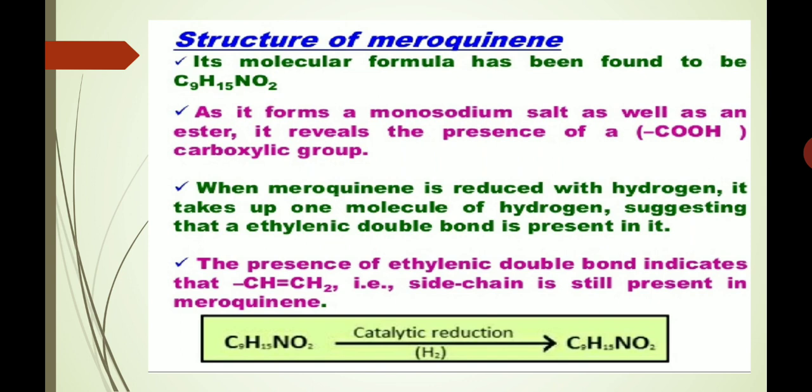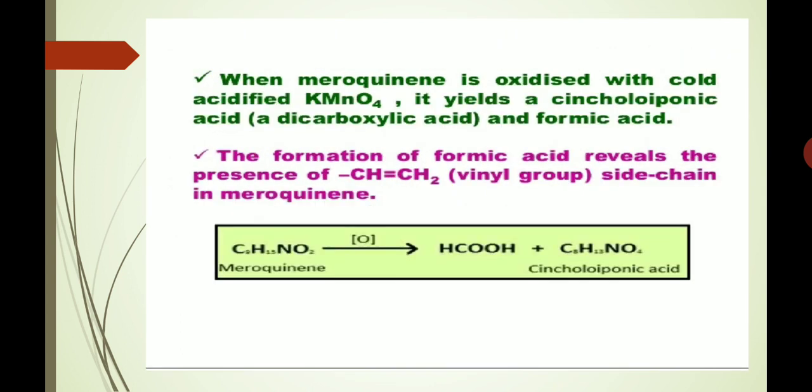Now we will take the structure of meroquinine. Its molecular formula has been found to be C9H15NO2. As it forms a monosodium salt as well as an ester, it reveals the presence of a carboxylic group. When meroquinine is reduced with hydrogen, it takes up one molecule of hydrogen, suggesting that an ethylenic double bond is present. The presence of this double bond indicates that the CH=CH2 vinyl side chain is still present in meroquinine. When meroquinine is oxidized with cold acidified KMnO4, it yields syncholopinic acid, which is a dicarboxylic acid, and formic acid. The formation of formic acid reveals the presence of the CH=CH2 vinyl group side chain in meroquinine.